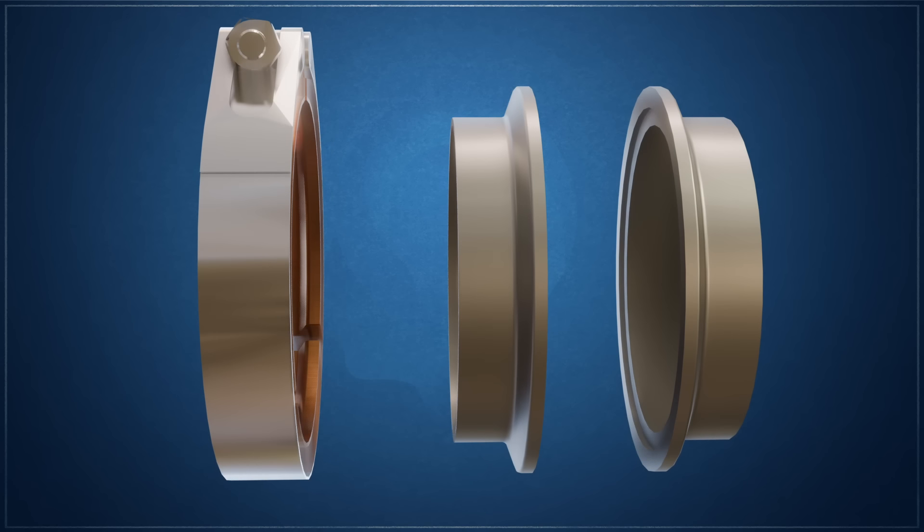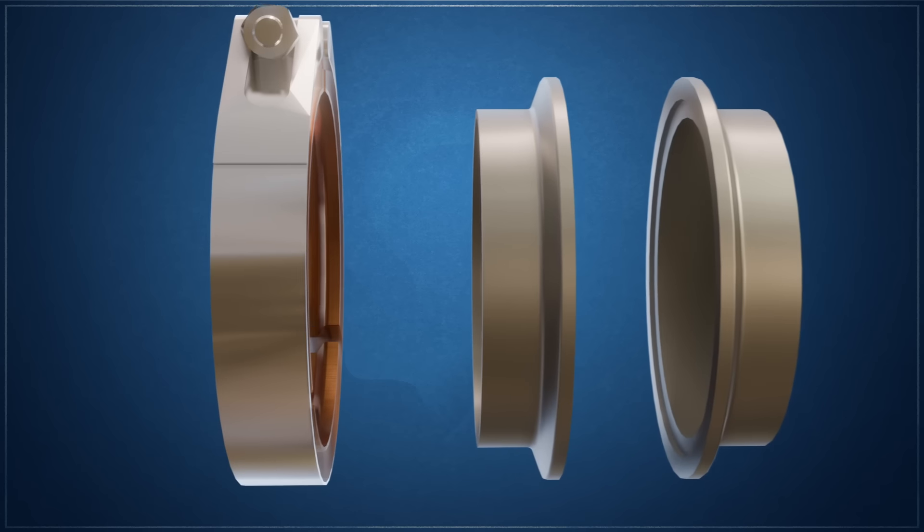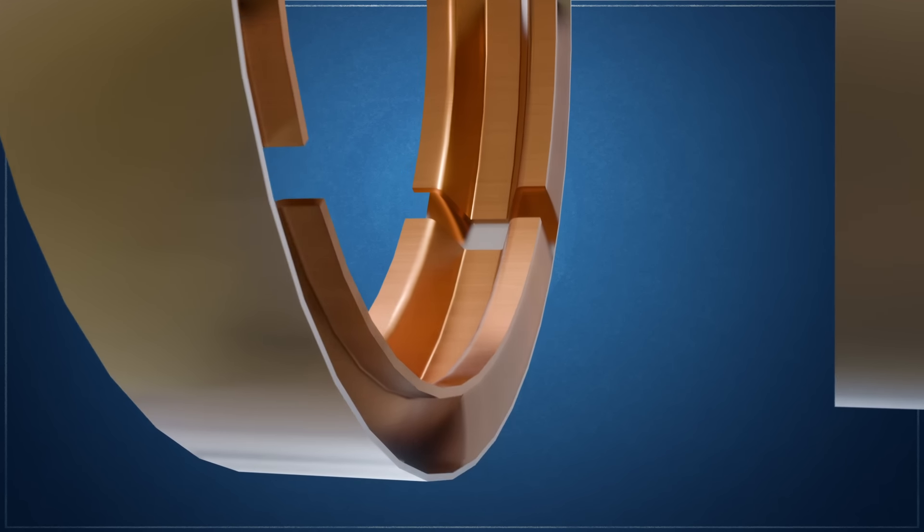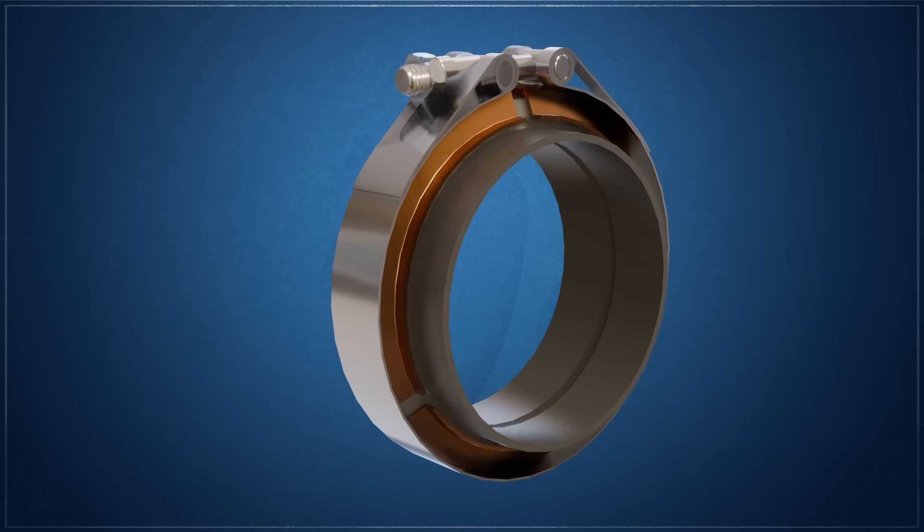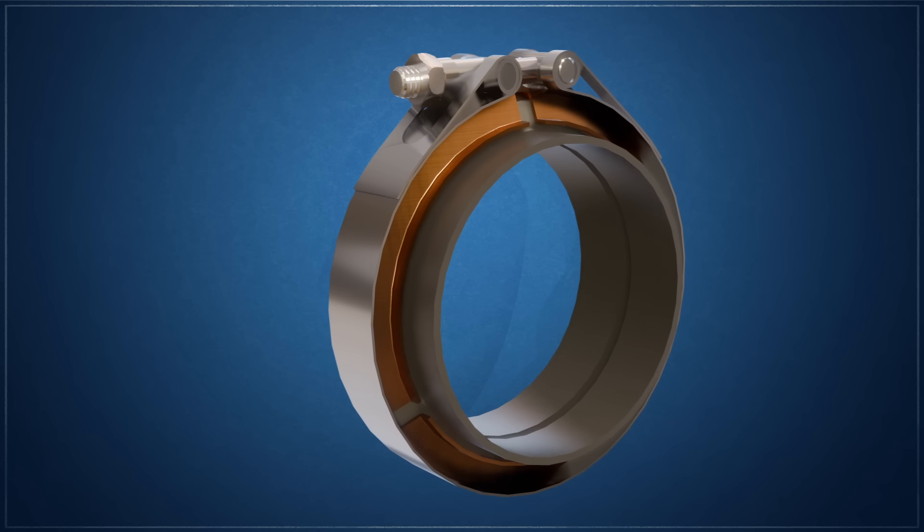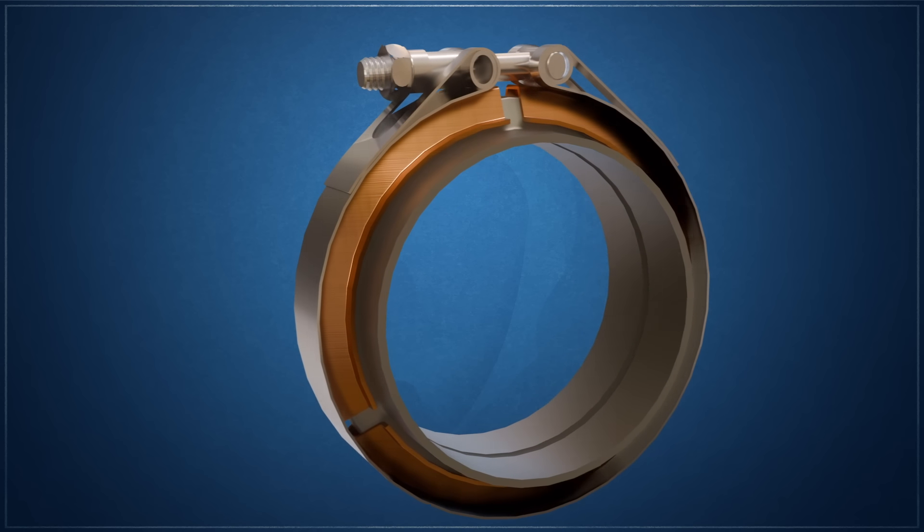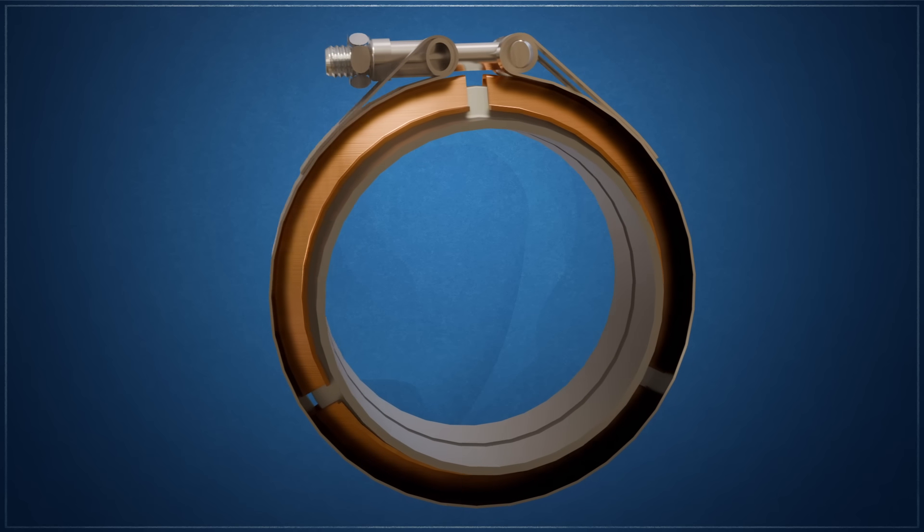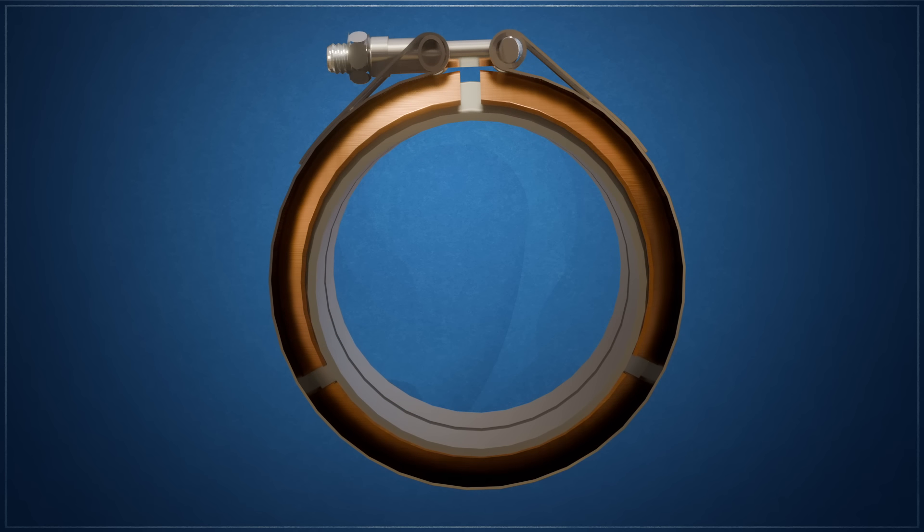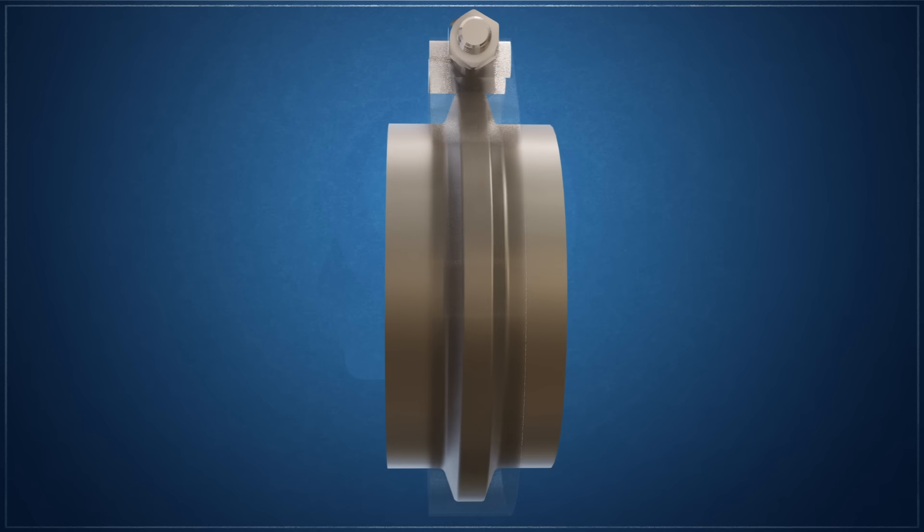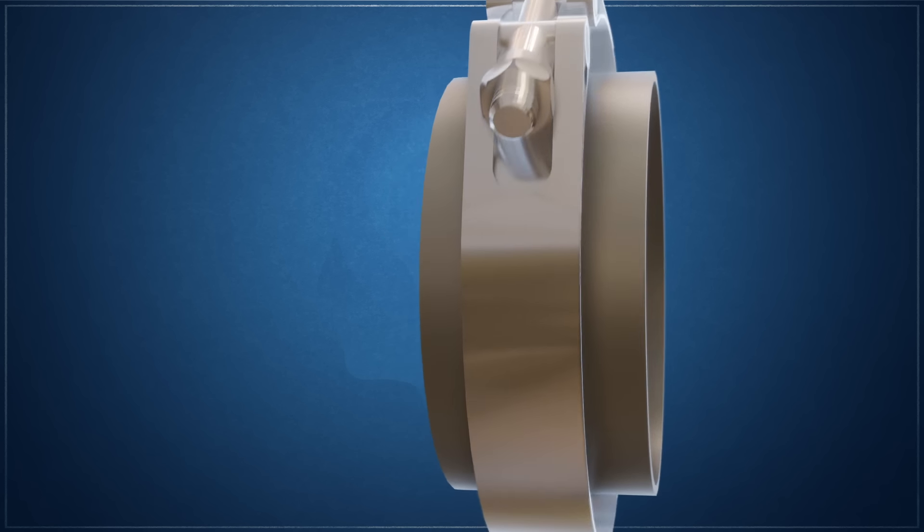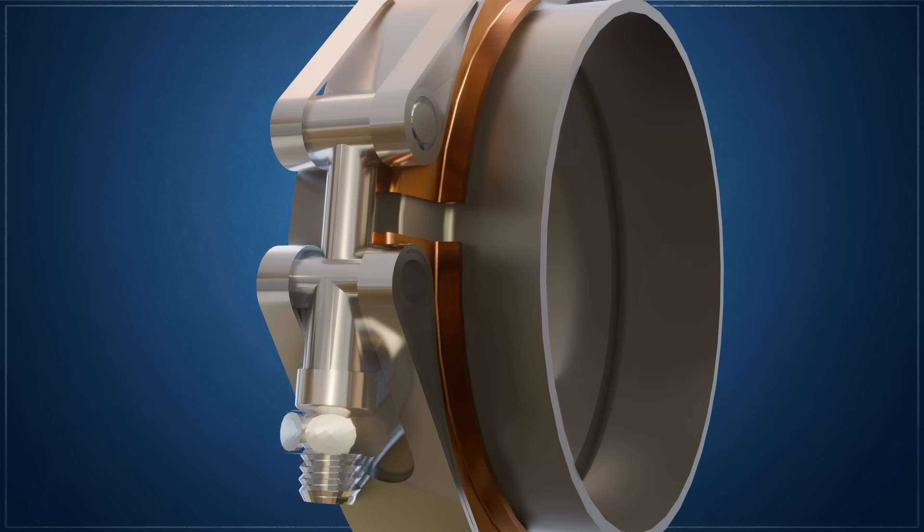A V-band clamp consists of three main components, two flanged rings with V-shaped outer edges and the flexible metal band with a matching V-shaped inner profile. When the band is tightened around the flanges, it forces them together, creating both radial and axial pressure. This dual-direction force results in a tight uniform seal around the entire circumference of the joint. The clamp's band is typically made from high-strength materials like stainless steel or inconel for durability and corrosion resistance. The V-shaped profile of the band and flanges is precisely engineered to distribute force evenly, minimizing stress concentrations and reducing the risk of leaks or failures. Most V-band clamps use a T-bolt or over-center latch mechanism for tightening, which allows for quicker installation and removal without special tools.